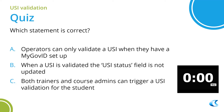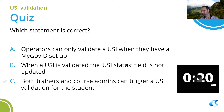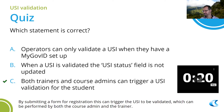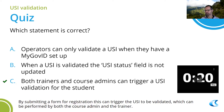The correct answer is: both trainers and course administrators can trigger a USI validation for a student. Option A is a little ambiguous — course administrators don't need a MyGov ID set up if they're using the system, but if they're not using the system, they would need MyGov ID. Trainers do it via the portal — they can apply the registration step and that will trigger the USI to be sent off for validation.